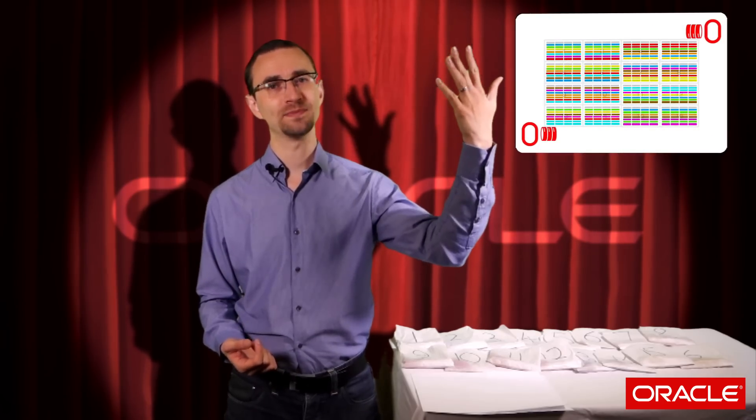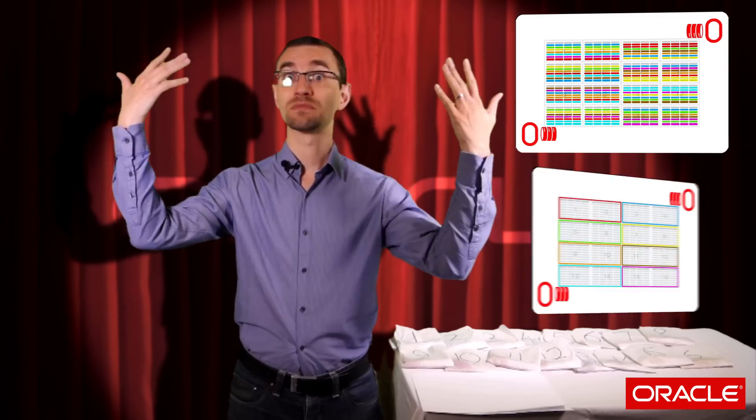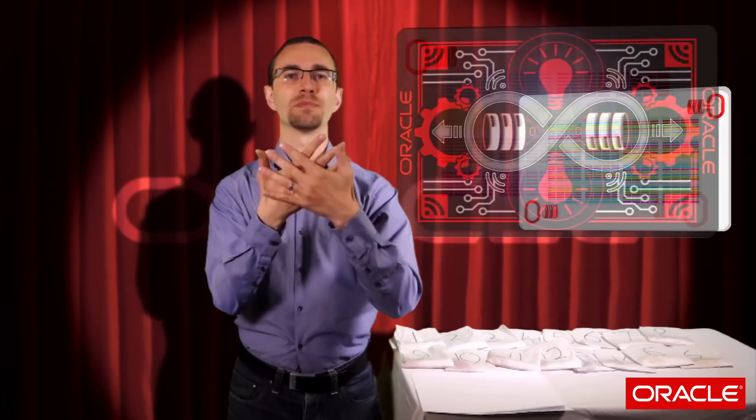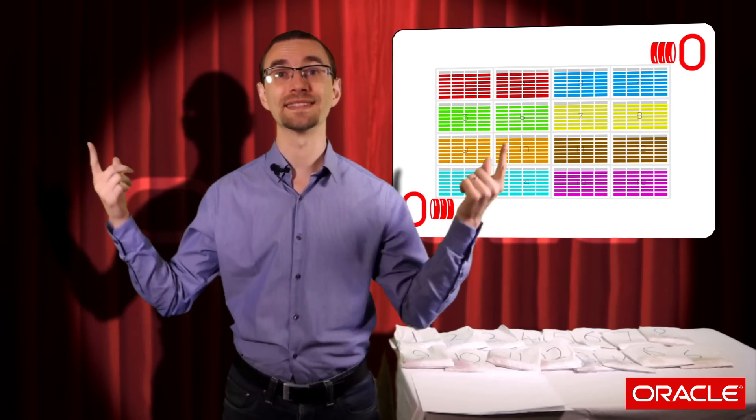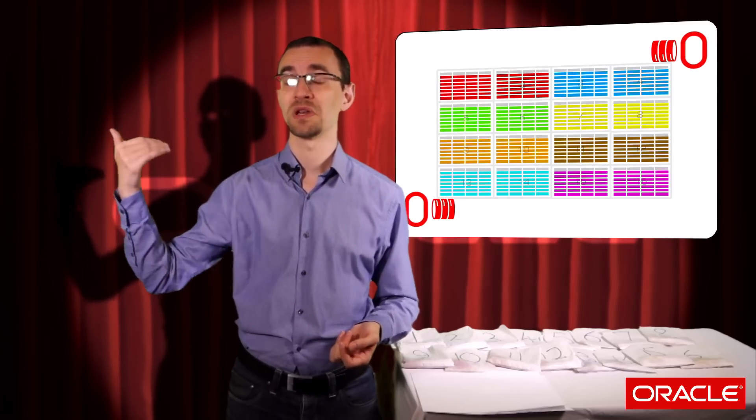In this, you've got the data stored in the table and the primary key values stored in the corresponding index. An index organized table combines those two data structures into one. Therefore, your table is an index. And this means it's going to be sorted by whatever the primary key is.